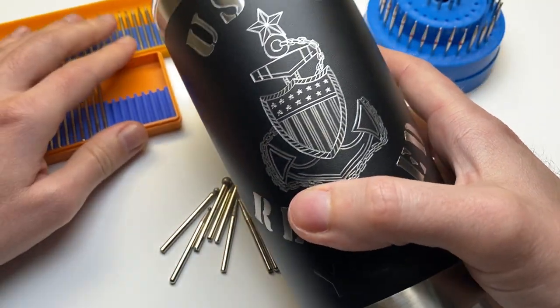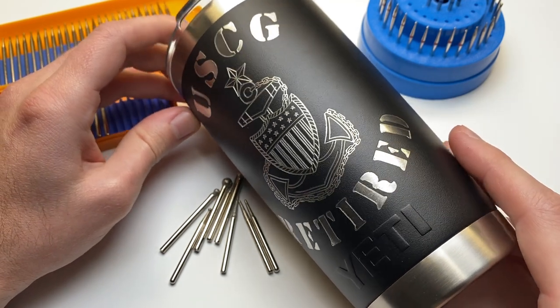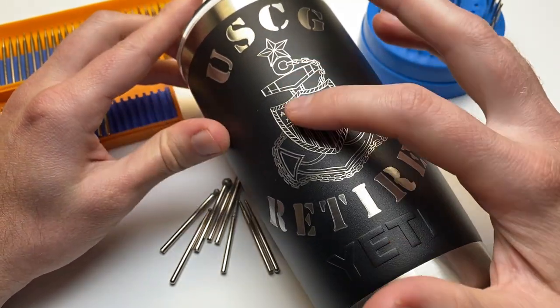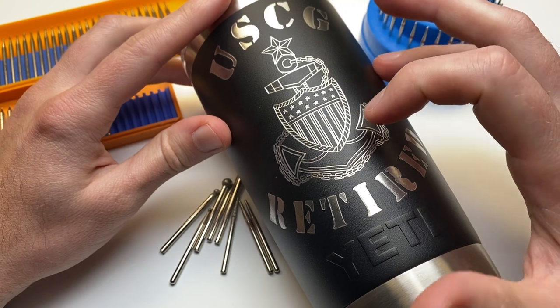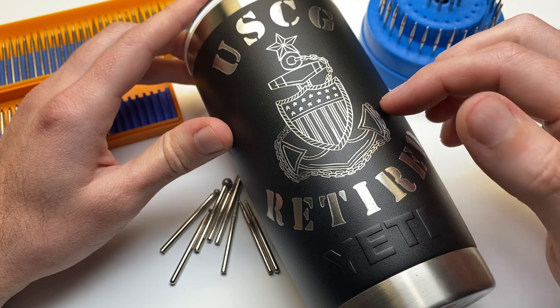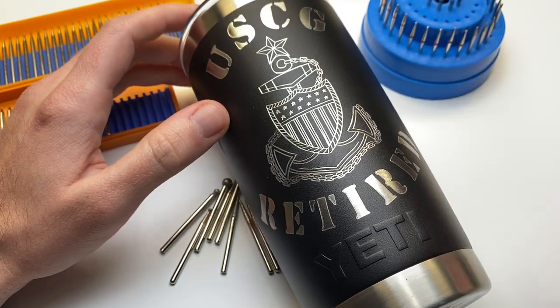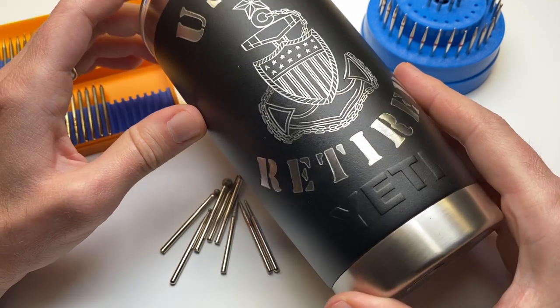Here is an example of what I would use Diamond Burr on. So this anchor right here is a lot of detail and any other burr that I have I will have difficulty engraving this design, but using Diamond Burr I was able to do this with no problem and it comes out really nice.